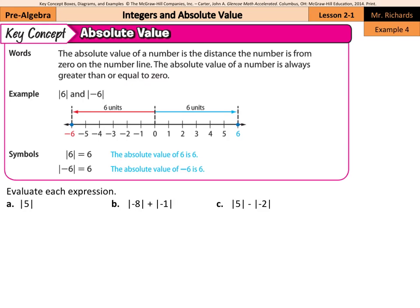In example 4A, evaluate each expression. The absolute value of five is simply five. In B, we have the absolute value of negative eight plus the absolute value of negative one. The absolute value of negative eight is positive eight, plus the absolute value of negative one is positive one, and eight plus one is nine. For subtraction: the absolute value of five minus the absolute value of negative two — the absolute value of five is five, minus the absolute value of negative two is two, and five minus two is three.